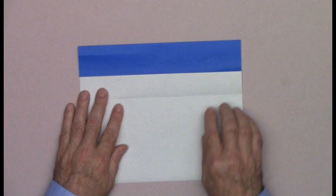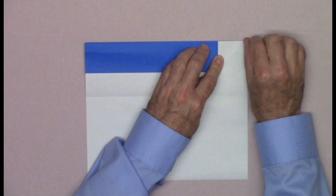Rotate the paper so that the folded edge is at the top. Fold the corner to align with the top edge. Do the same thing on the other side.